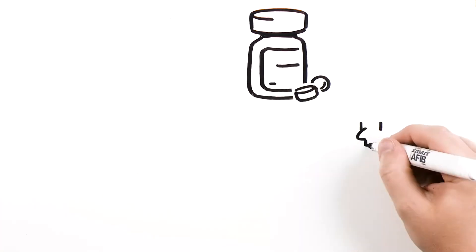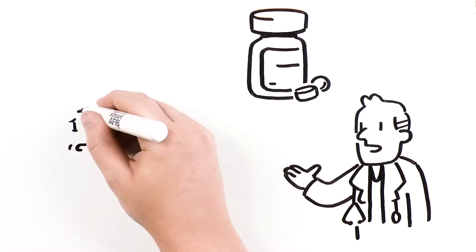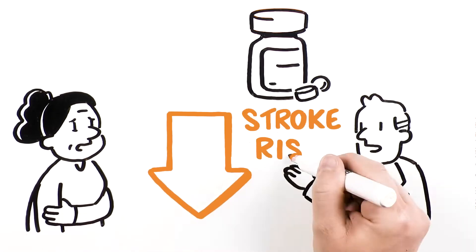Medication known as anticoagulants, a special type of blood thinner, are prescribed by a physician to reduce your stroke risk.